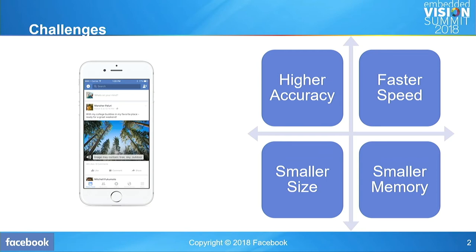Most of the research focuses on improving accuracy, like pushing for a challenge in ImageNet. But that's not necessarily enough for running these models in real-time on mobile phones. For embedded devices, you have to optimize for other axes as well, such as speed, memory size, or even just the model size itself. You have to balance between these axes to make sure your model runs on a phone or embedded device in real-time, very efficiently.